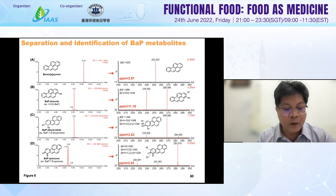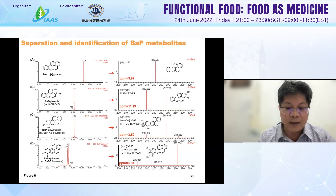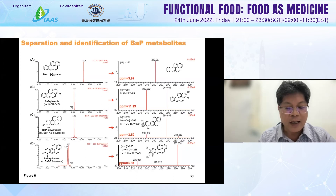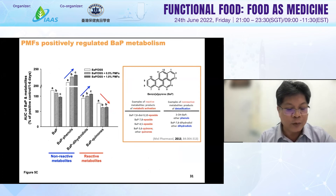We confirmed whether PMF is able to affect BAP metabolism by measuring BAP metabolites from fecal samples and XME expression levels in the liver and colon by LC-MS/MS and real-time PCR. We found three main categories of BAP metabolites: reactive metabolites such as BPDE and BAP-quinone, and non-reactive metabolites including BP-phenol and BAP-dihydrodiol. The area under the curve, AUC, data shows that dietary intake of PMF contributes to activating BAP metabolites by increasing non-reactive metabolites and decreasing reactive metabolites.